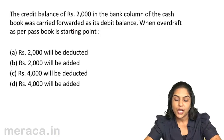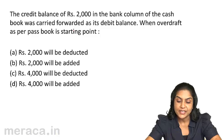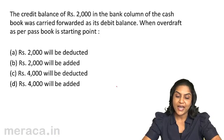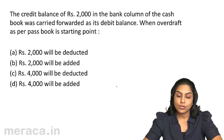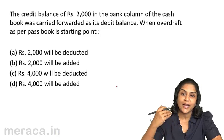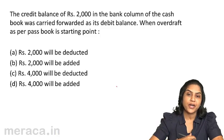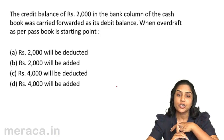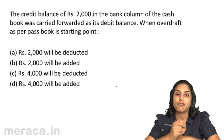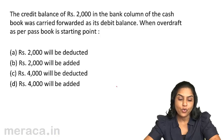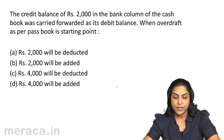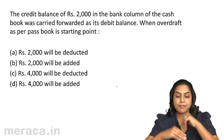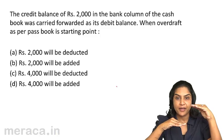A credit balance of rupees 2000 in the bank column of the cash book was carried forward as its debit balance. Not only has the credit balance not been carried forward as a credit balance, it has been carried forward as a debit balance. Therefore, there is a wrong debit and there is an omission of a credit balance. In total, there is a difference of 2000 and 2000, which comes to 4000. When the overdraft as per pass book is the starting point, the error is in the cash book and the debit is more — meaning debits are higher in the cash book.